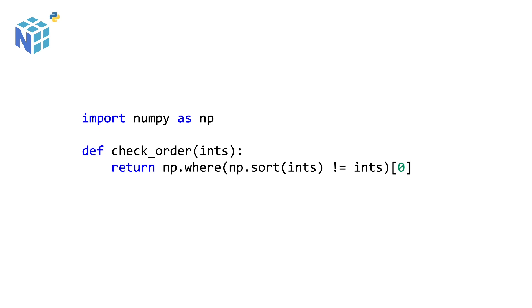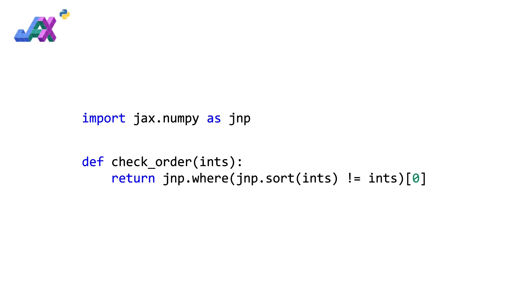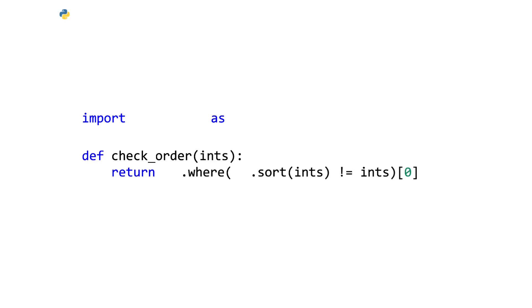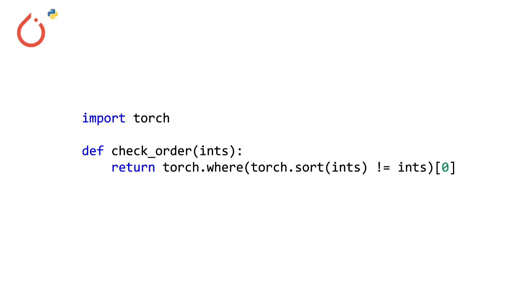This is our first library, and the interesting thing is that the solution is almost identical across every single Python library — modulo the namespace. For CuPy, which is CUDA-accelerated Python, all you do is replace 'import numpy as np' with 'import cupy as cp' and replace the NPs with CPs — and now it's accelerated on the GPU. Jax does the exact same thing with 'import jax.numpy as jnp'. You can probably guess what's coming for TensorFlow, which uses 'import tensorflow as tf', and PyTorch, where you just import torch and you're good to go.